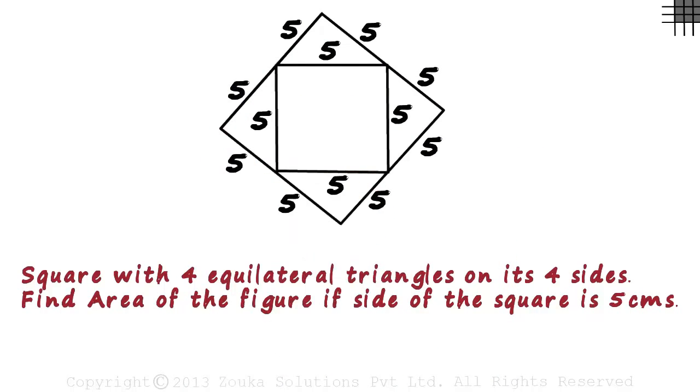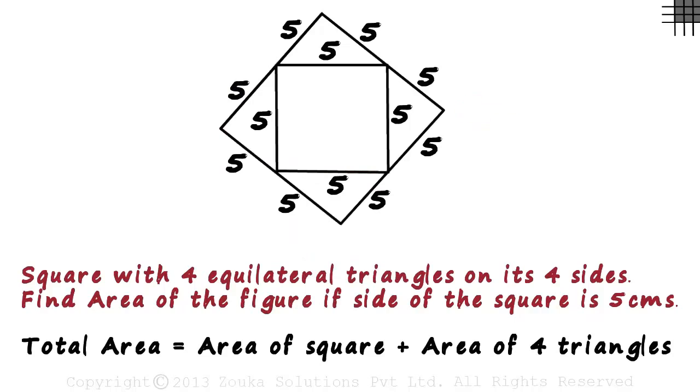So the total area of this figure will be the area of the square plus the area of the four triangles. For the perimeter however, we just considered the outer edges and ignored the edges of the square.